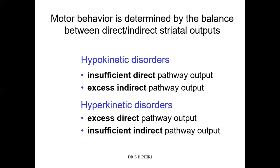The opposite is called hyperkinetic disorders. In hyperkinetic disorders, we have excess direct pathway output and insufficient indirect pathway output. So movements are facilitated more and there's less inhibition of movements. The end result is exaggerated motor movements, which is called a hyperkinetic disorder.